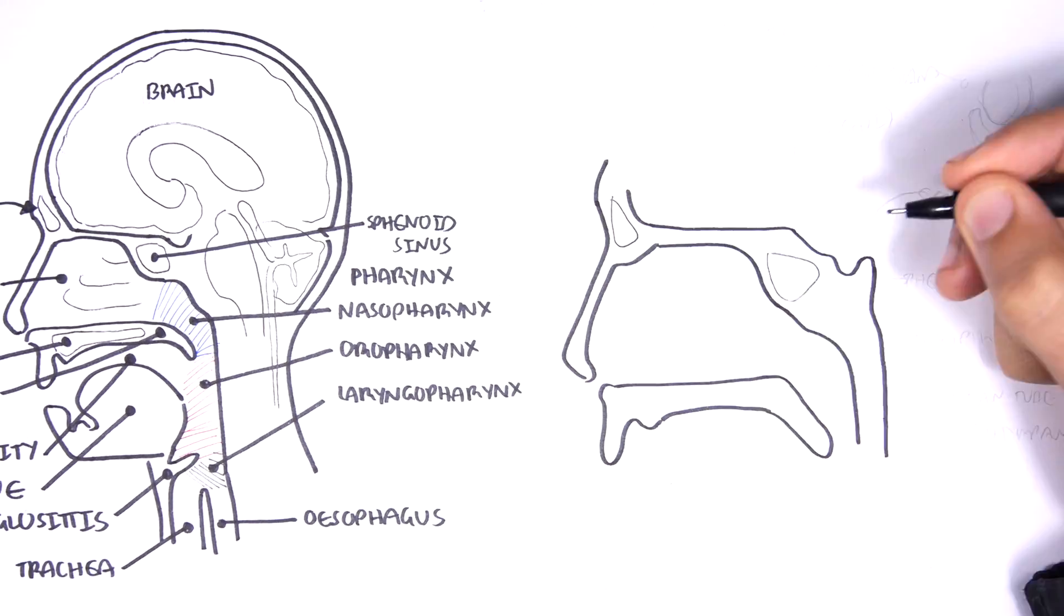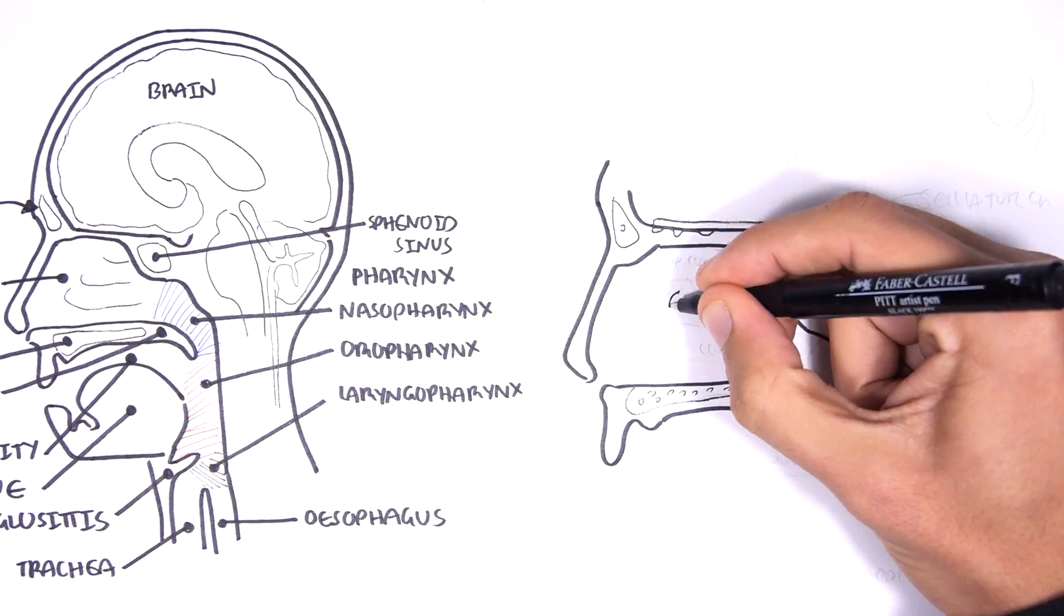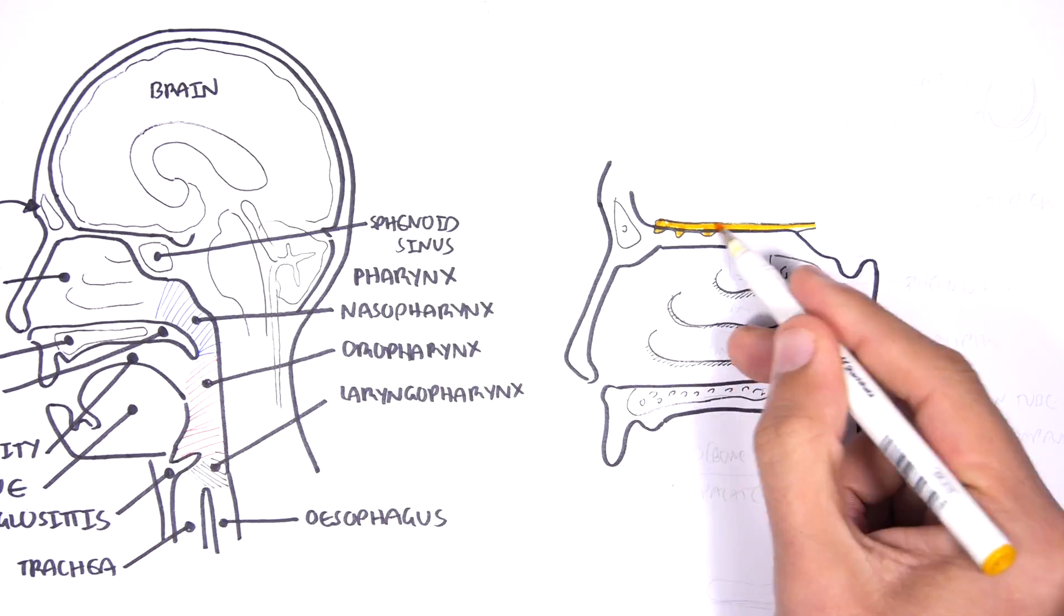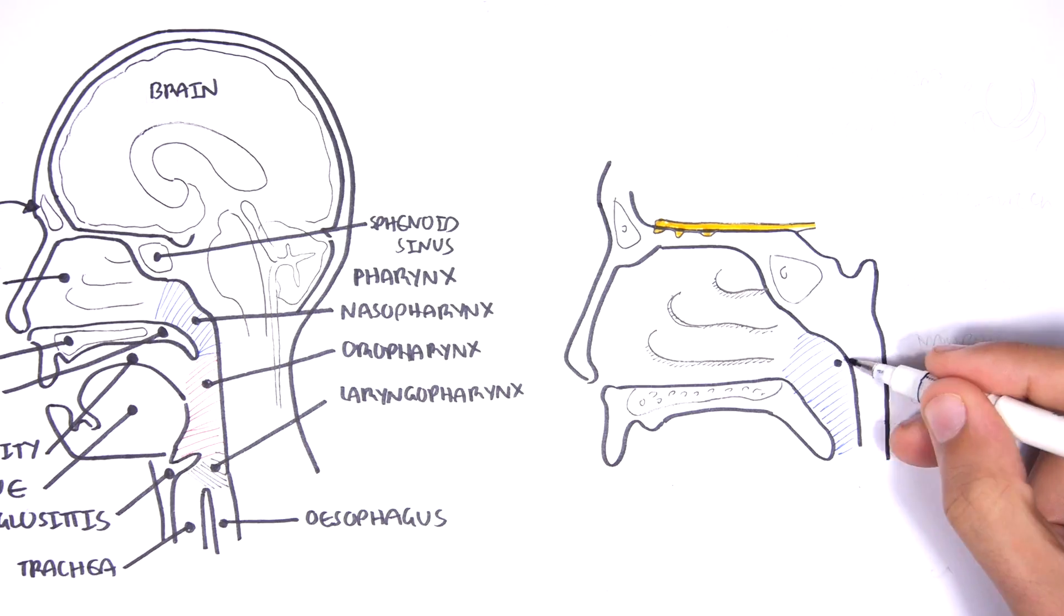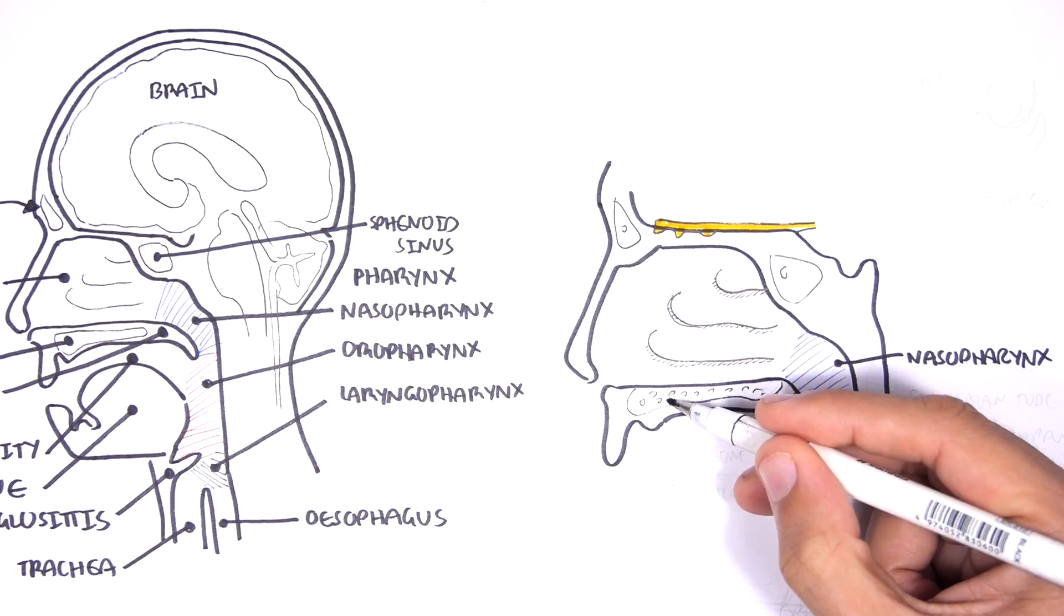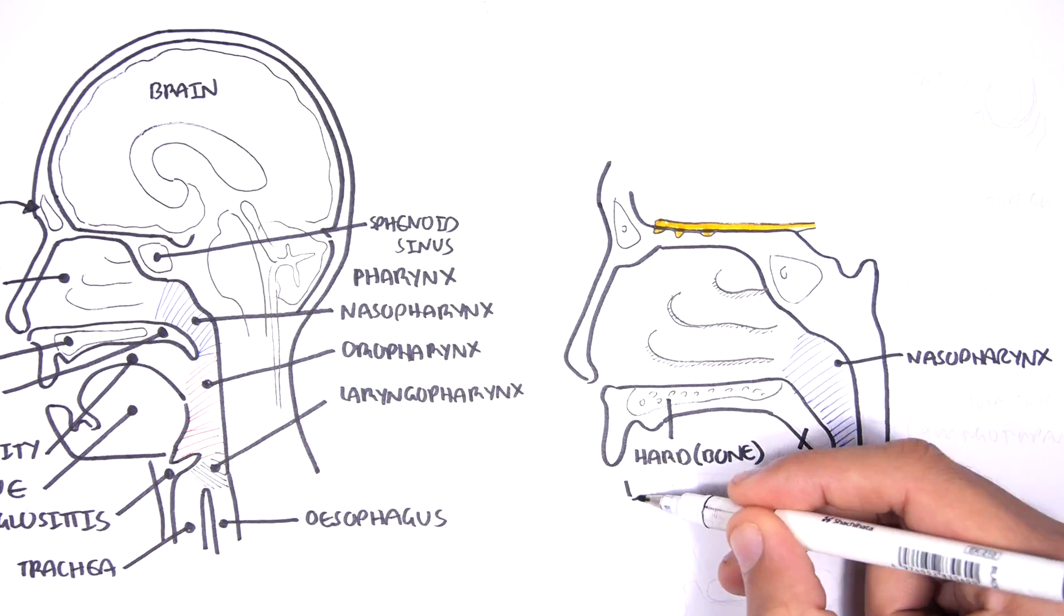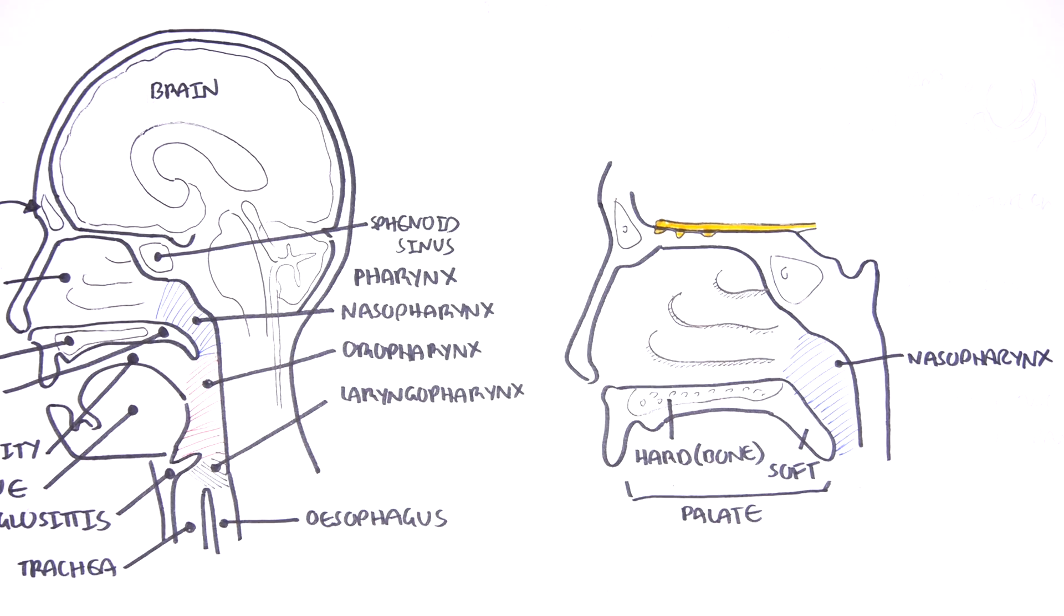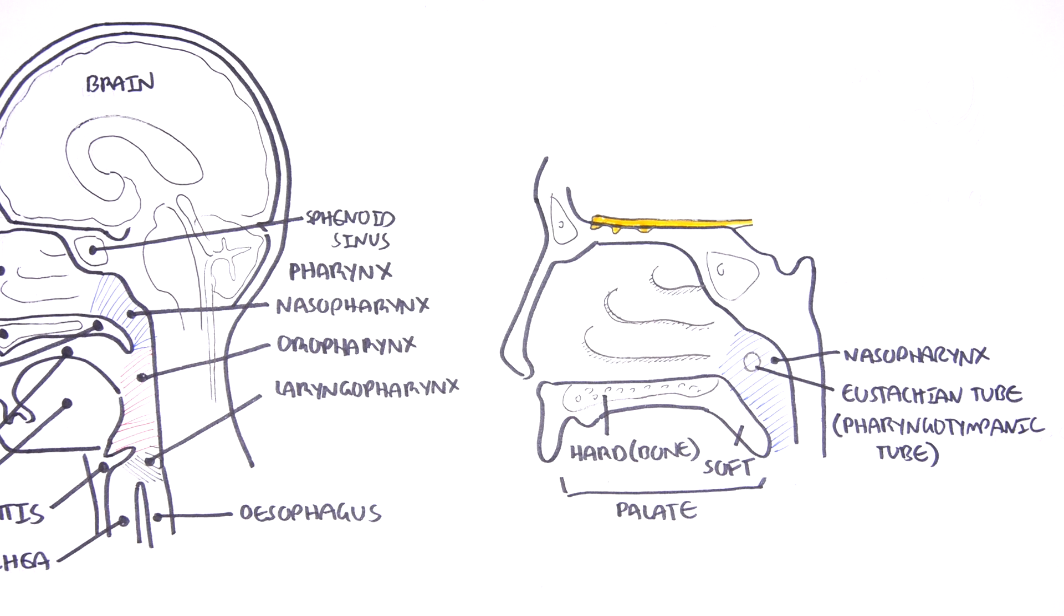There are other important structures within and surrounding the nasal cavity. Let's take a closer look again. So here again we have the nasopharynx, your hard palate and your soft palate. At the back of the nasal cavity, situated really within the nasopharynx, is a small opening where the eustachian tube, also known as the pharyngotympanic tube, drains into.